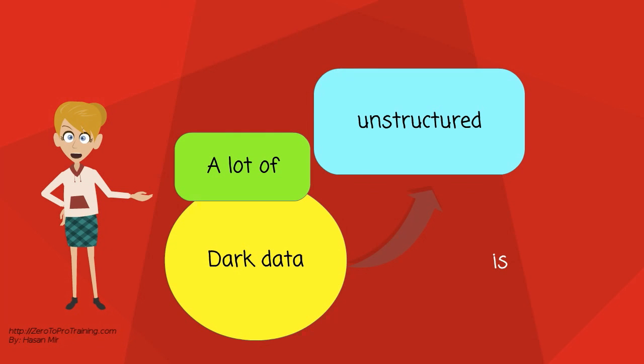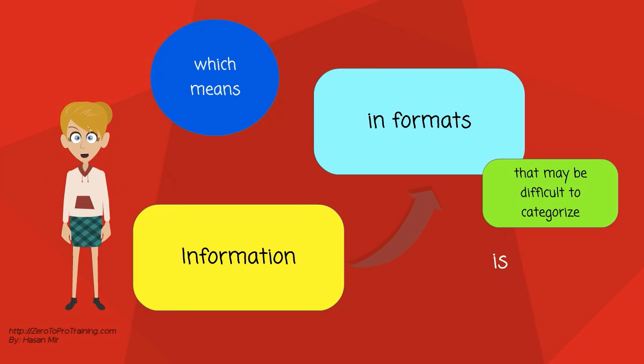A lot of dark data is unstructured, which means that the information is in formats that may be difficult to categorize.